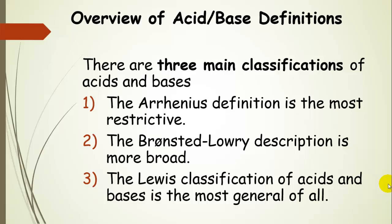Arrhenius defined acids and bases first, but this is the most restrictive definition. The Bronsted-Lowry description is more broad than the Arrhenius definition, and that's the one we're going to stick with throughout most of this topic. Finally, the Lewis classification of acids and bases is the most general, but that's something we're not going to spend a lot of time on.